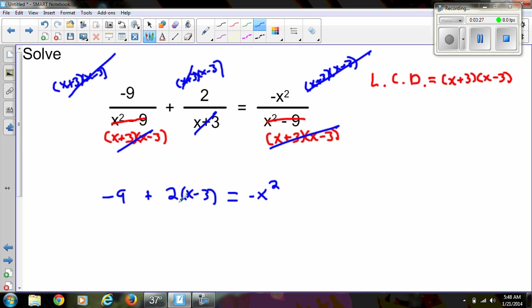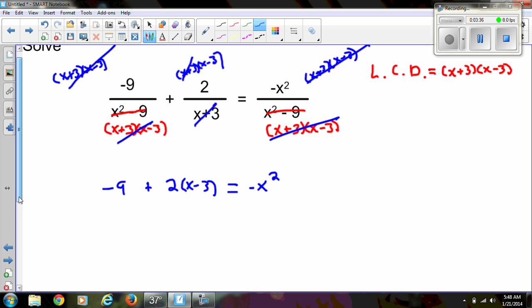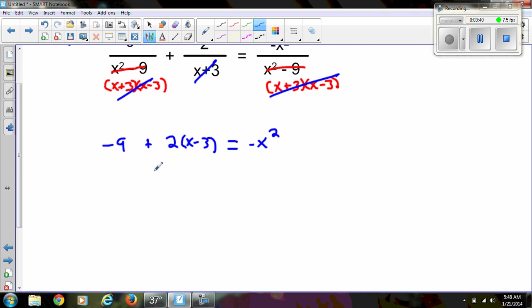So by multiplying each term by the LCD, we cleared out our fractions. All our variables are now in the numerator and this looks to be a quadratic, something we know how to solve. So let's go back and use our solving techniques for quadratics and figure our answer out.